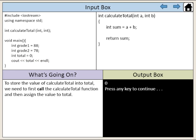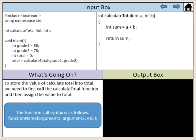To store the value of calculateTotal into total, we need to first call the calculateTotal function and then assign the value to total. The function call syntax is as follows: the function name, followed by the arguments in parentheses, and then the semicolon.